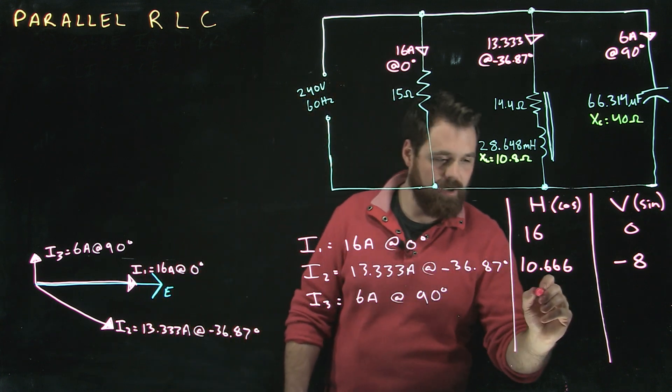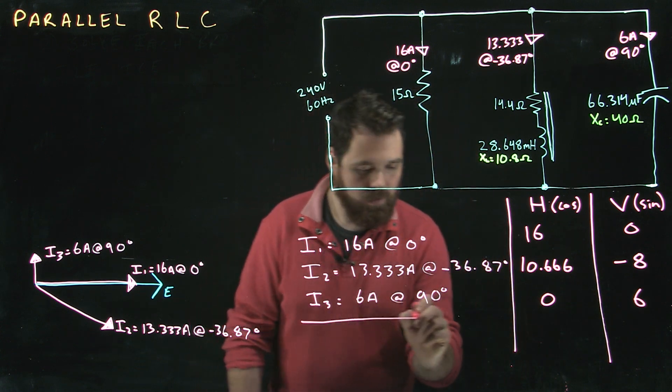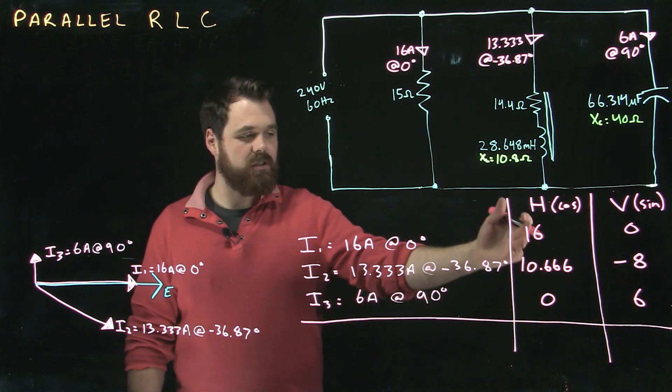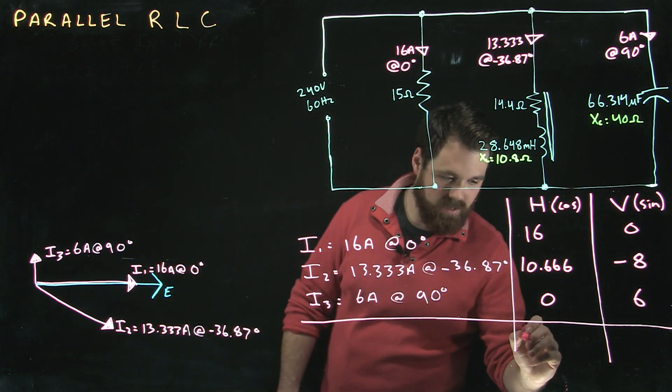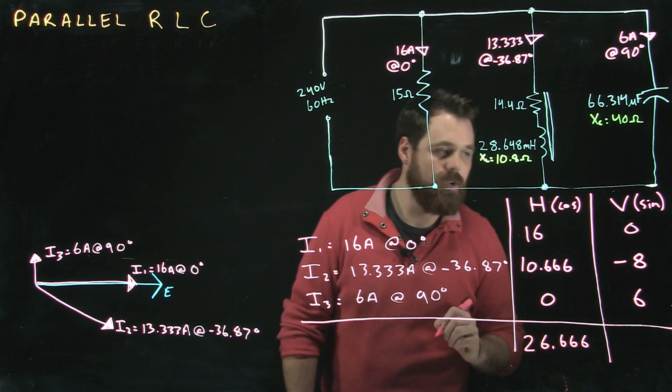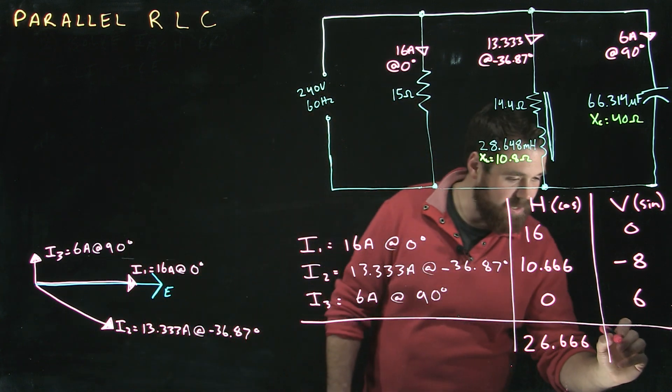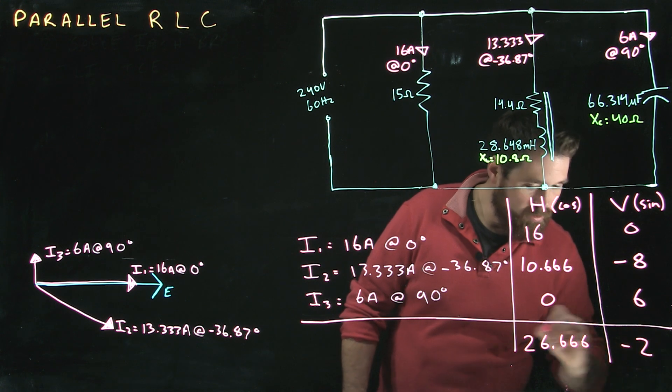And then here we get 0 and positive 6. So we add up all our horizontals: 16 plus 10.666 gives us 26.666, and we add up our verticals: negative 8 plus 6 gives us negative 2.